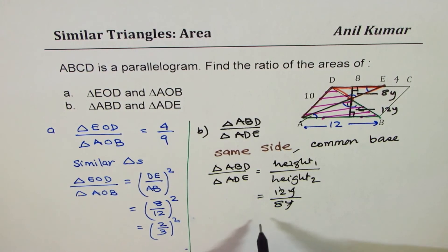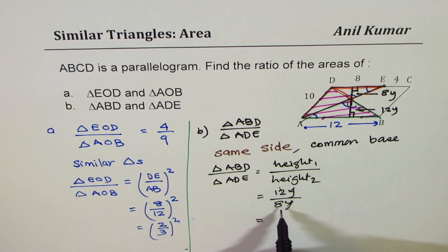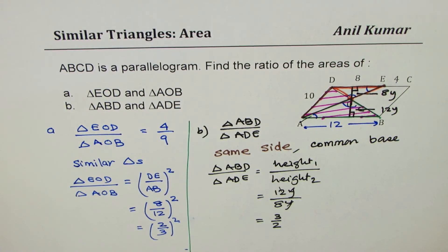Y, y cancel, so we get a ratio of, dividing by 4, we get a ratio of 3 over 2, correct? So that becomes the solution.